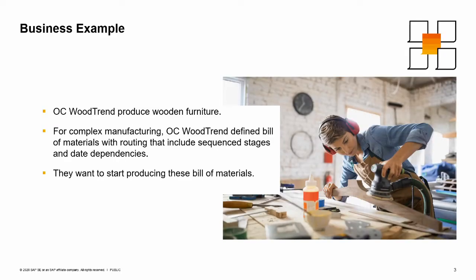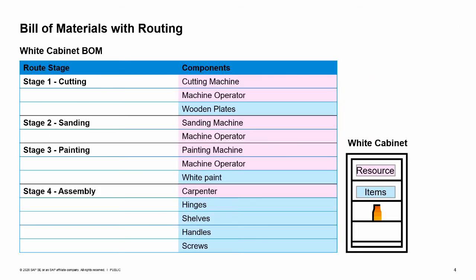OC Woodtrend produces wooden furniture. For complex manufacturing, OC Woodtrend defines bill of materials with routing that includes sequenced stages and date dependencies. They want to start producing these bill of materials. In this scenario, we examine the production process of a white cabinet bill of materials. There are four stages in the production process of the cabinet: cutting, sanding, painting, and assembly, as shown in the image.